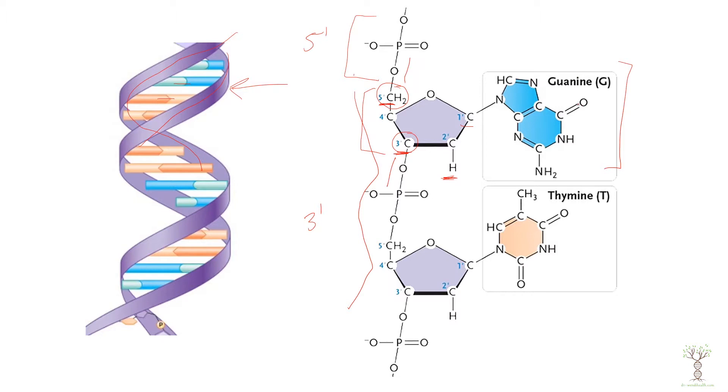Now the nucleotides when they combine with the opposite strand, guanine is always going to bind with cytosine and thymine is always going to bind with adenine. Now if this strand of DNA was in the five prime to three prime direction, the other strand is in the opposite direction. This strand will be three prime to five prime. So we call the DNA strands anti-parallel.